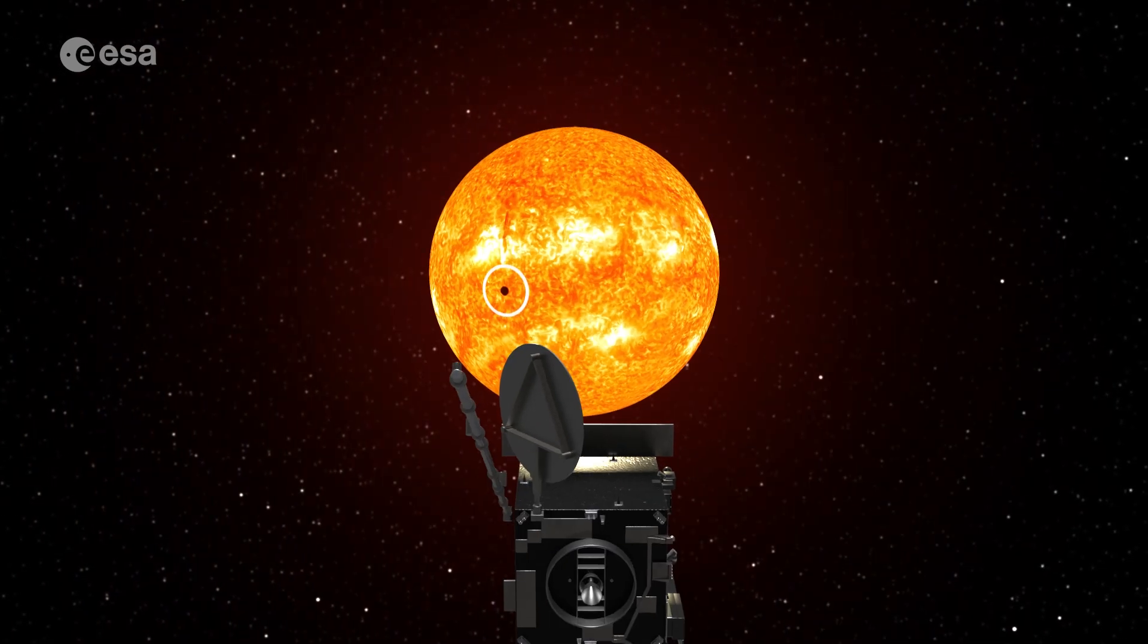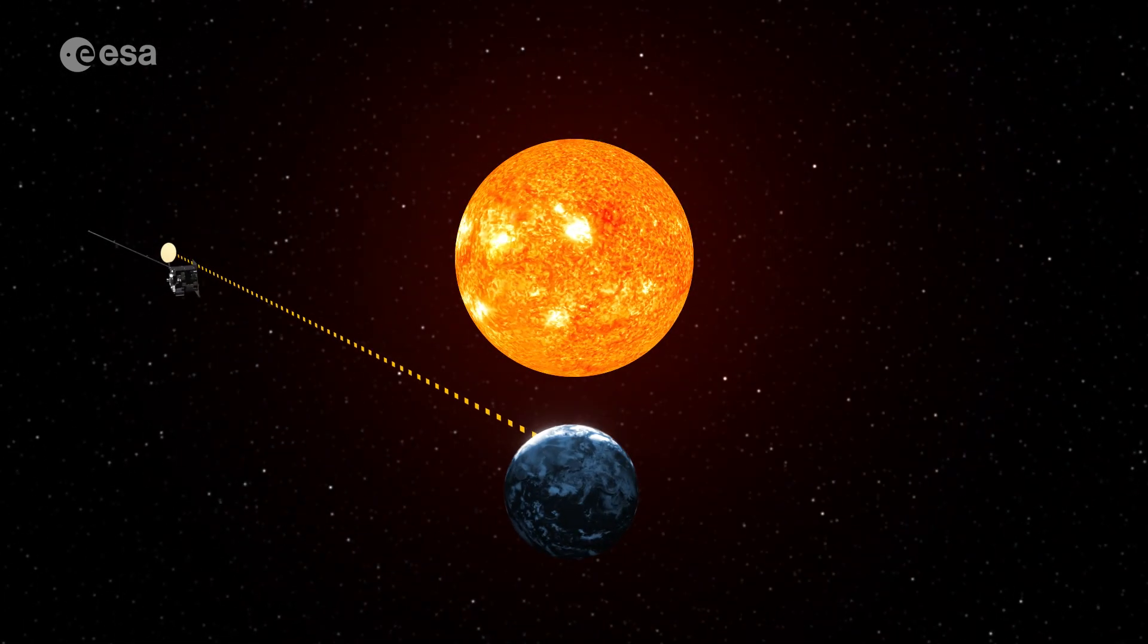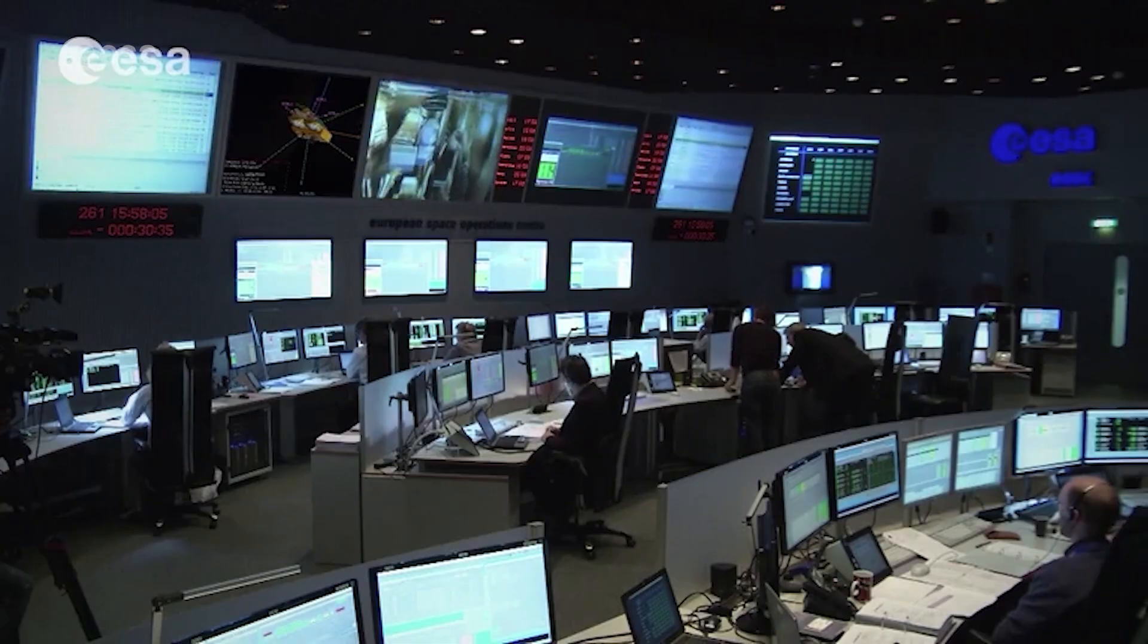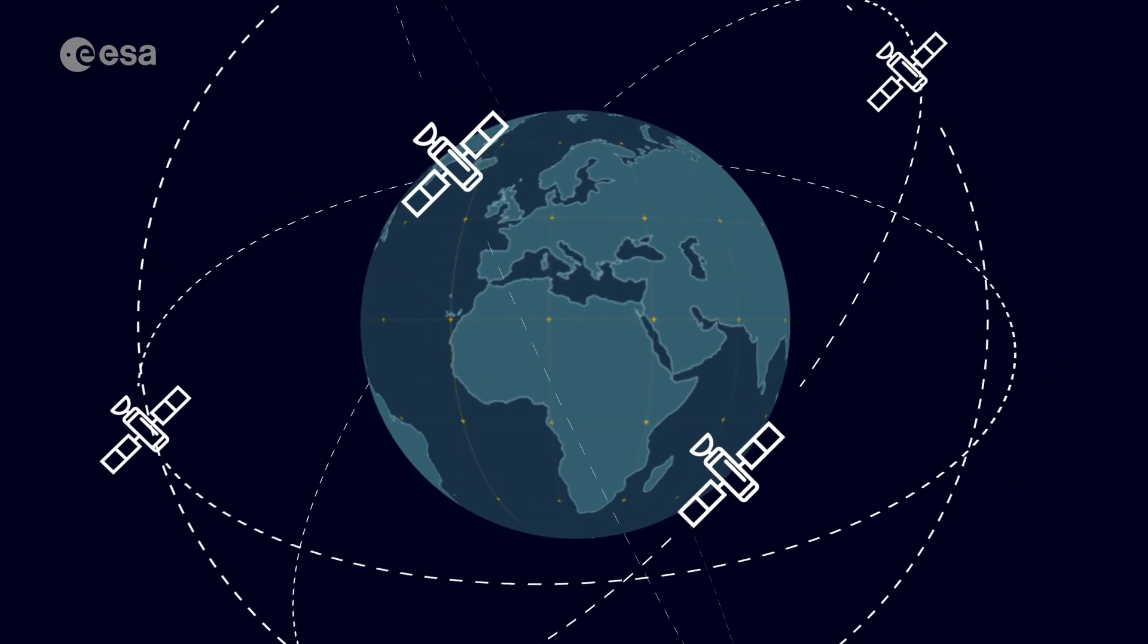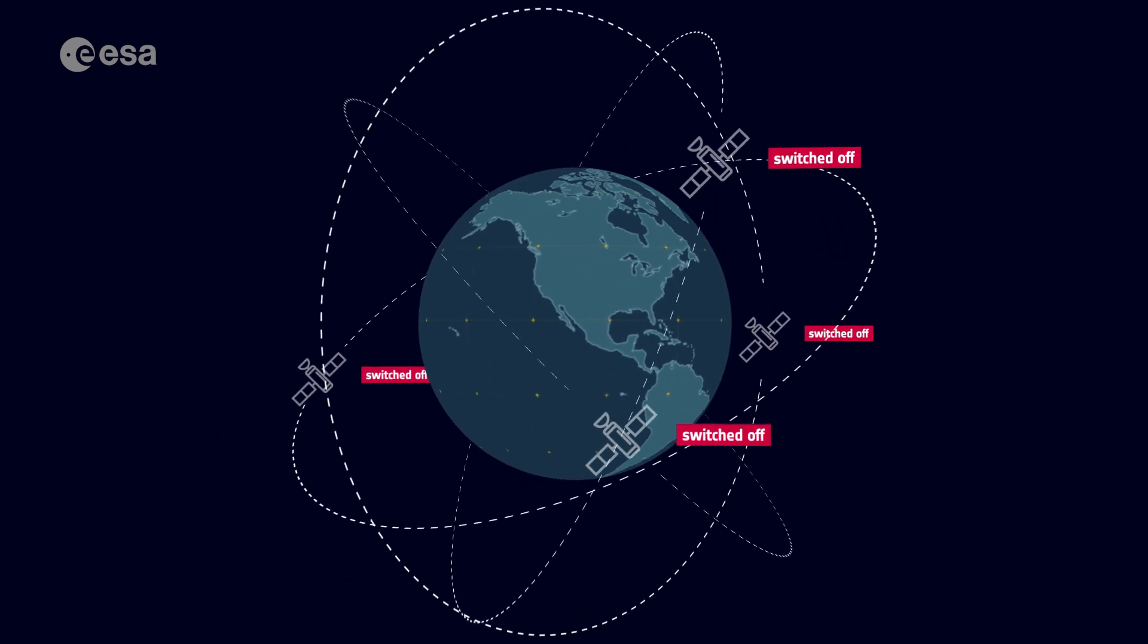ESA Vigil will help spot sources of dangerous solar activity before they rotate into view from Earth, as well as tracking enormous explosions that could severely disrupt satellites in space and infrastructure on the ground, threatening the health of astronauts in space, or in the future, on the Moon.